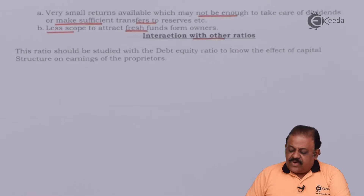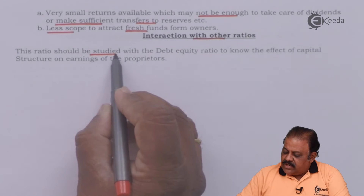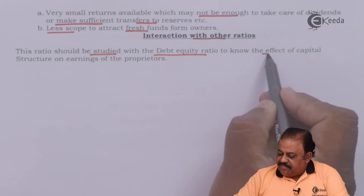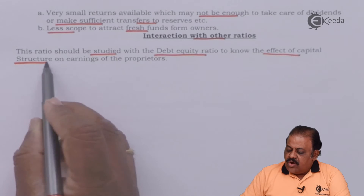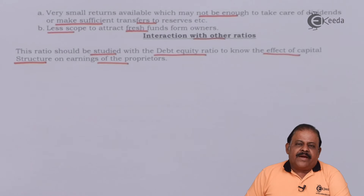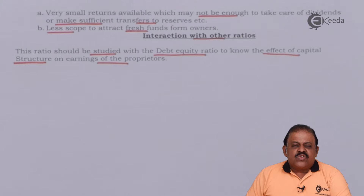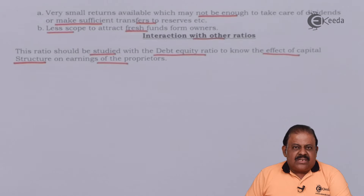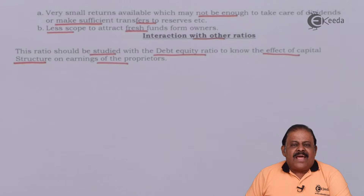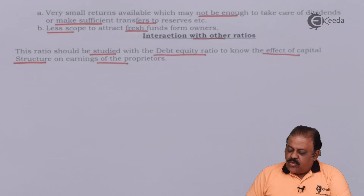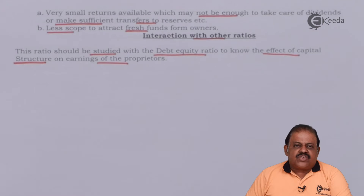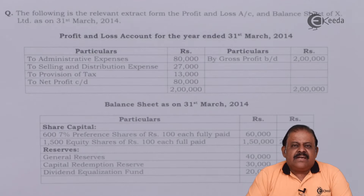Return on proprietors fund ratio should be studied with the debt-equity ratio to know the effect of capital structure on earnings of the proprietors. The debt-equity ratio shows how much borrowed funds and how much owned funds are used by the business. Out of total earnings, the return to borrowed funds is deducted first, and the balance is available to owners' fund. Therefore, return on proprietors fund is studied together with the debt-equity ratio.